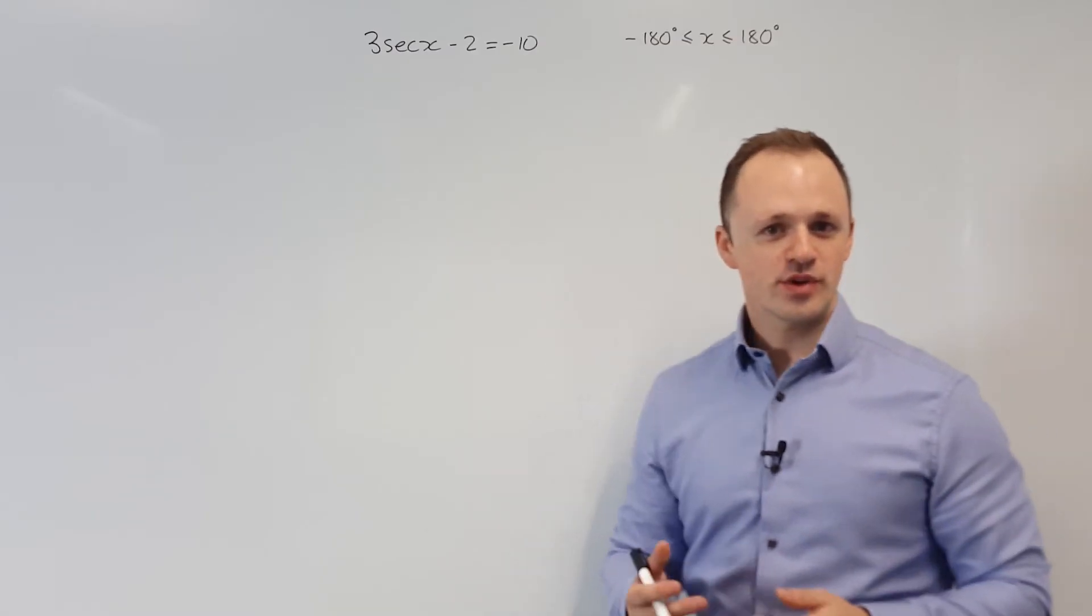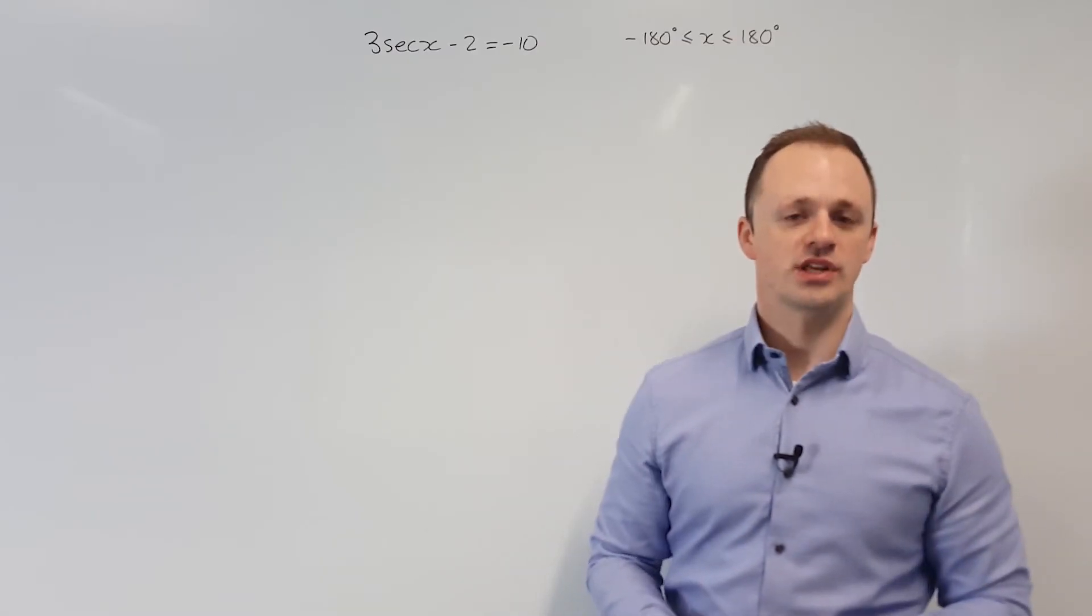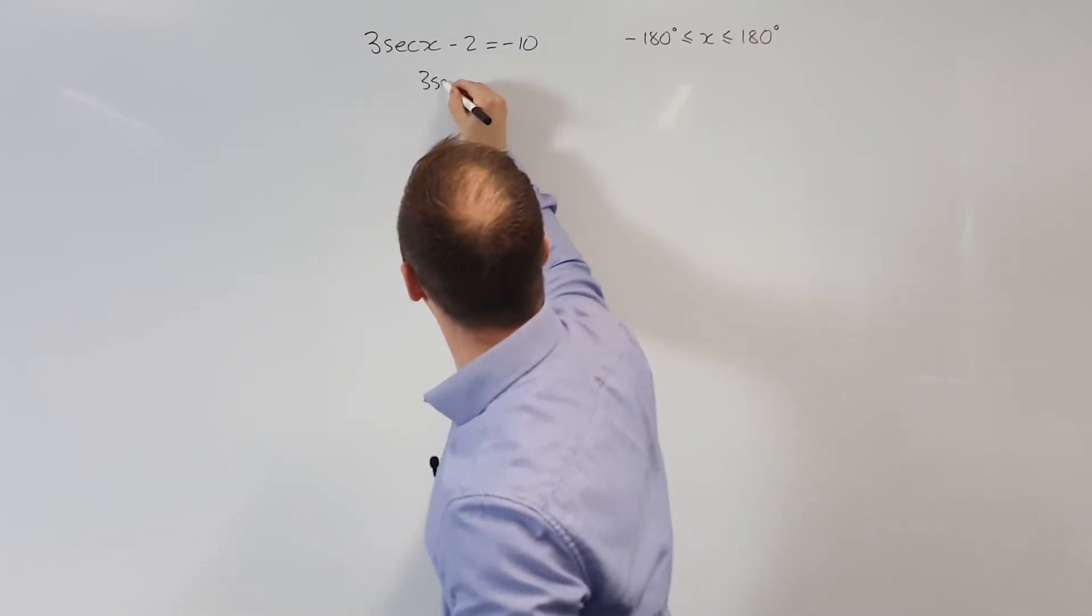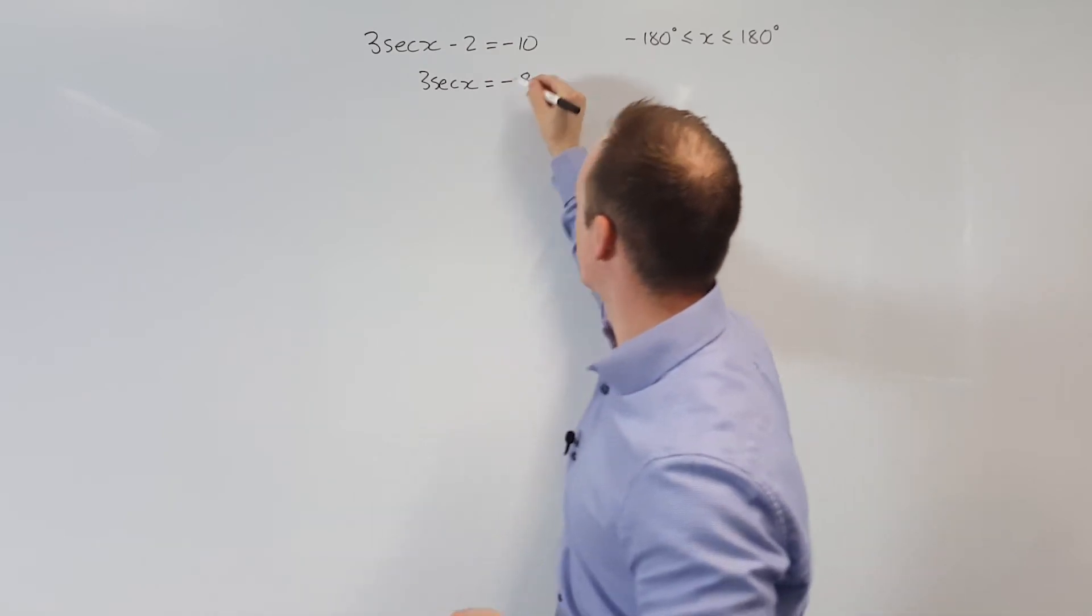Okay, so here we have 3 sec x minus 2 equals negative 10. First of all, I'm going to add 2 to both sides. That will give me 3 sec x equals minus 8.